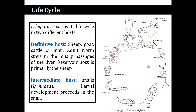The life cycle consists of two different hosts. The definitive host — that is, the primary host — includes sheep, goat, cattle, and man, where the adult worm stays in the biliary passage of the liver. The reservoir host is basically pig, whereas the intermediate host may be Limnaea, Planorbis, or Bulinus for the larval development process.